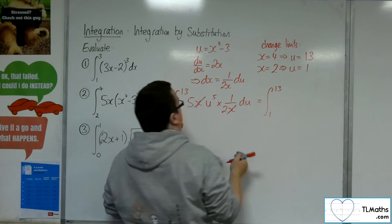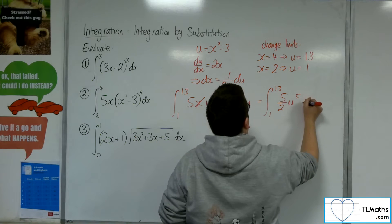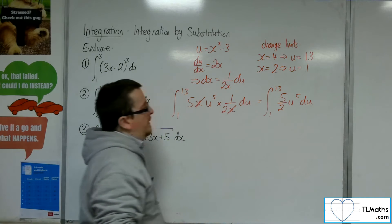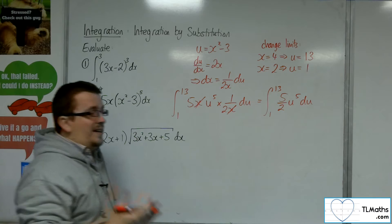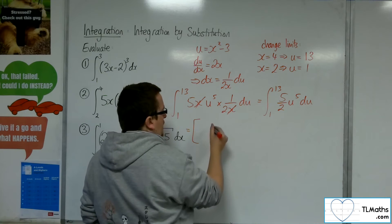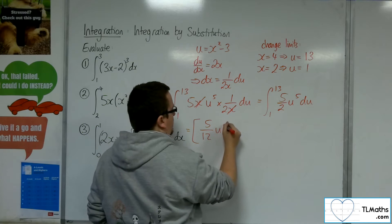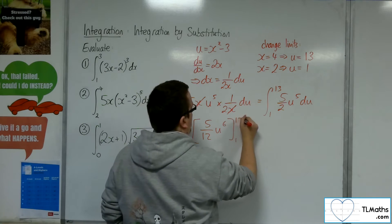And I'll have 1 to 13 of 5 halves u to the 5 du. So now I can add 1 to the power divided by the new power. So I should get 5 over 12 u to the 6, evaluated between 1 and 13.